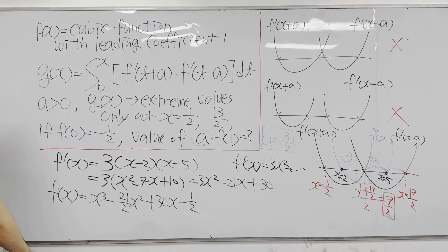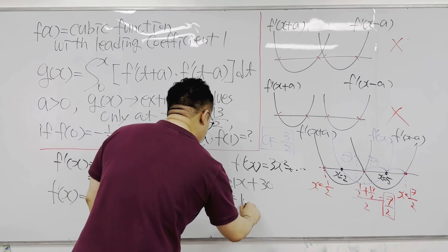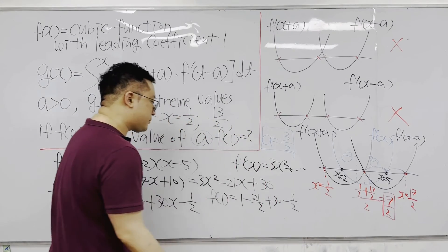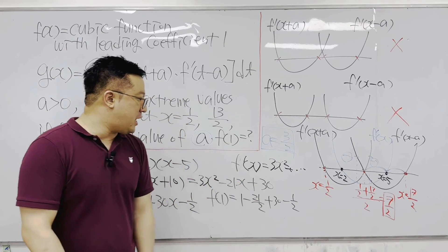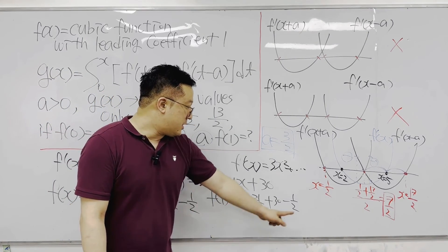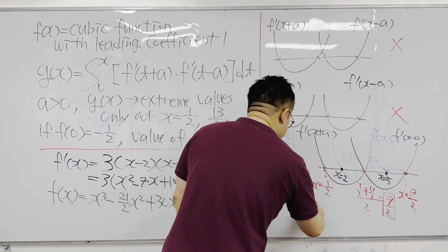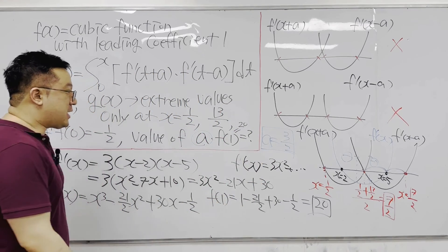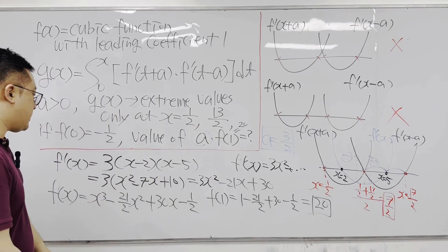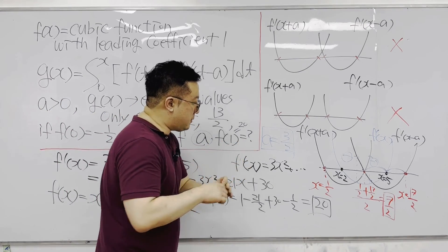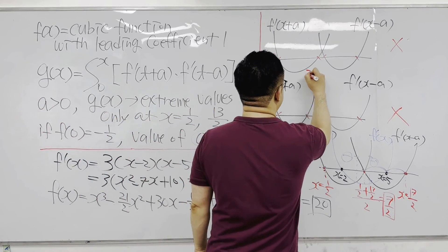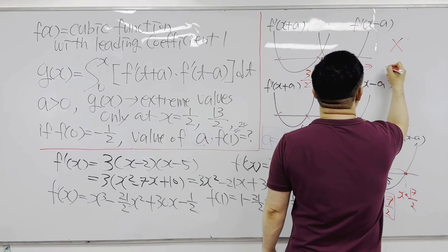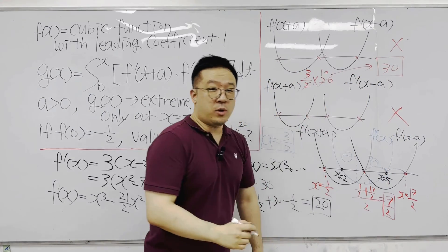Plugging x = 1 into f(x): f(1) = 1 − 21/2 + 30 − 1/2. Combining the fractions: −21/2 − 1/2 = −22/2 = −11. Then 1 − 11 + 30 = 20. So f(1) = 20. The question asks for a × f(1) = (3/2) × 20 = 30. The final answer is 30.